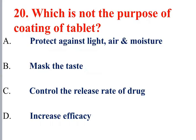Question 20: Which of the following is NOT a purpose of tablet coating? Purposes of coating include: protect against light, air, and moisture; mask the taste; control drug release (delayed, sustained, and controlled release). The answer is Option D — coating does not increase drug intensity or maximum response.